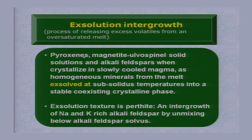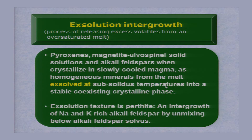I am citing examples of pyroxenes, magnetite-ulvöspinel solid solutions, and alkali feldspar. When crystallized in a slowly cooled magma as homogeneous minerals, when the magma contains an excess amount of volatiles and crystallizes under sub-solidus temperatures, the exsolution phenomena takes place. As a result, stable coexisting crystalline phases are formed.